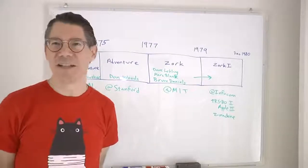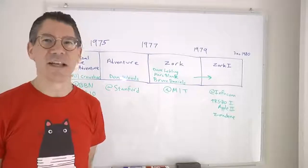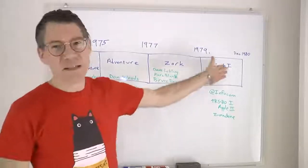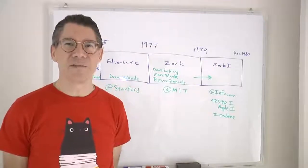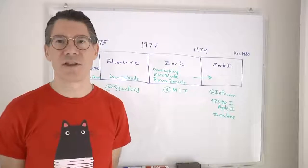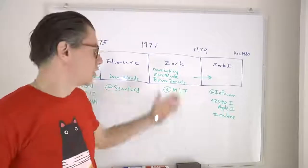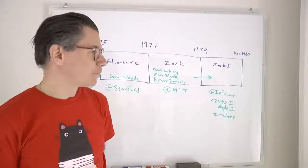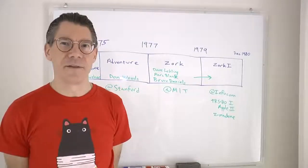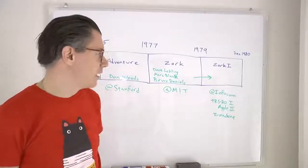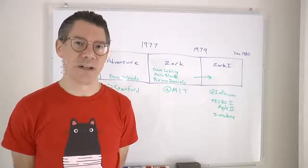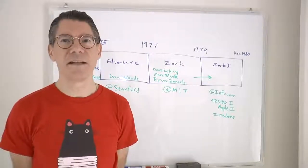At that point they had the great idea of starting a company, and they called it Infocom. From 1979 through the end of 1980, they worked on Zork 1, which was essentially the first third of the original Zork. They had to write the software for the personal computers of the day, which barely had 64 kilobytes of RAM — some even only had 48 kilobytes.